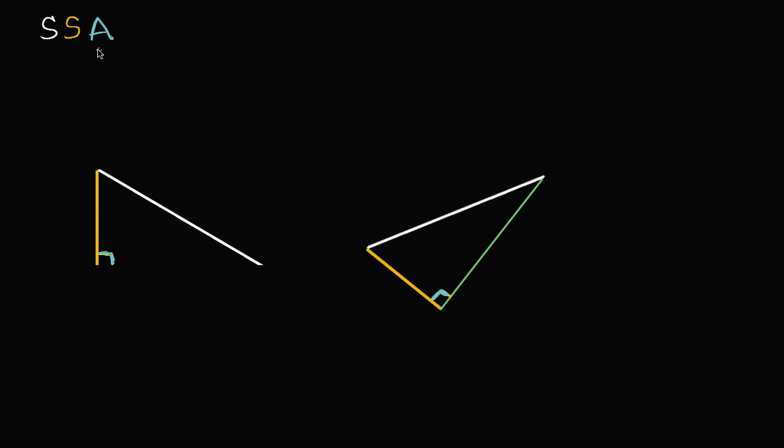What I'll do in this video is show you an exception, and the exception is when we are dealing with right triangles, in particular when this angle is a right angle. So this is a 90 degree angle, in which case this first side is going to be the hypotenuse, and the second side is going to be a leg.